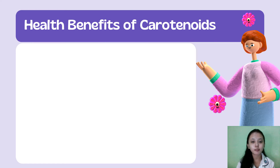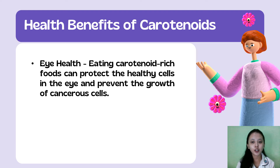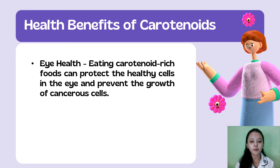Here are the health benefits of carotenoids. For eye health, eating carotenoid-rich foods can protect healthy cells in the eye and prevent the growth of cancerous cells. One of the leading causes of blindness is macular degeneration — the degeneration of the center of the retina. Long-term blue light exposure can cause this. However, the carotenoids lutein and zeaxanthin found in the retina can help absorb blue light. Studies show that incorporating at least 6 mg of lutein in your diet per day can decrease your risk of developing macular degeneration by 43%.